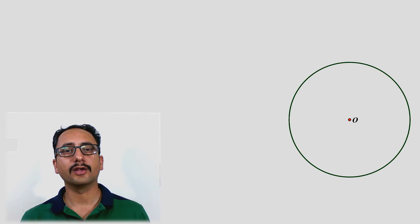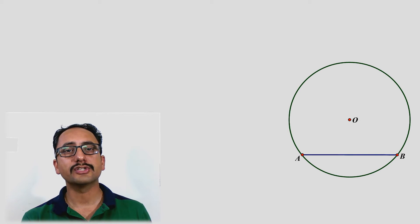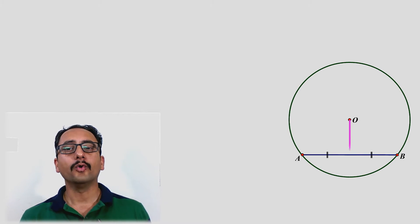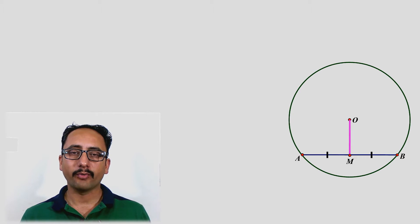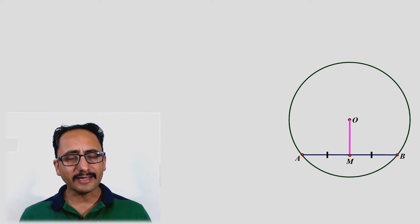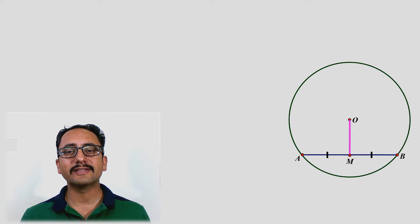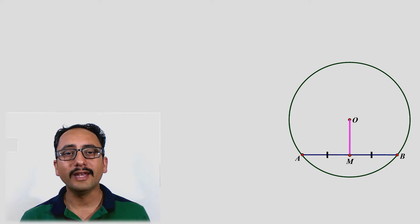We have a circle with center O in which AB is a chord, and OM is drawn to bisect the chord AB — meaning M is the midpoint of AB. If this line segment bisects AB, then it will be perpendicular to AB, and this is what the theorem states.